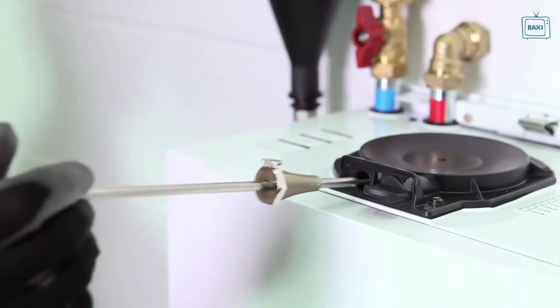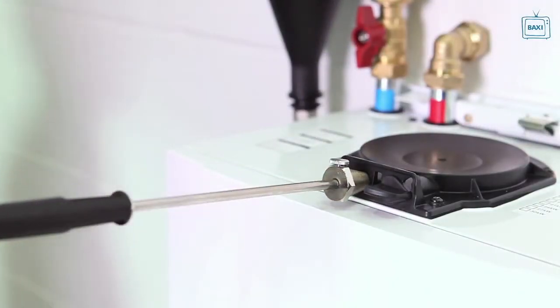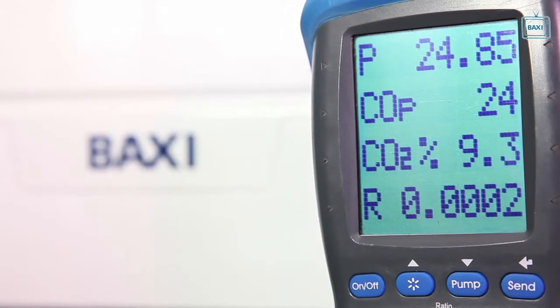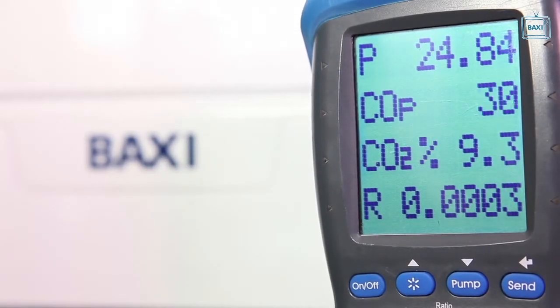Next, check the carbon monoxide and combustion ratio whilst the boiler is still running at maximum rate. Insert the analyser probe into the flue gas test point. Once stabilised, a positive check will give a reading of 9.3% plus or minus 0.1%.